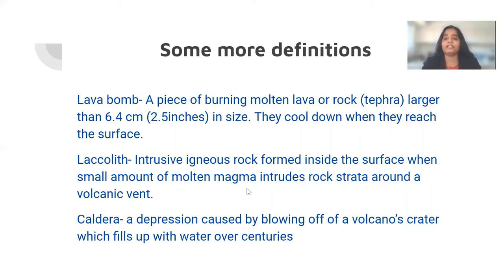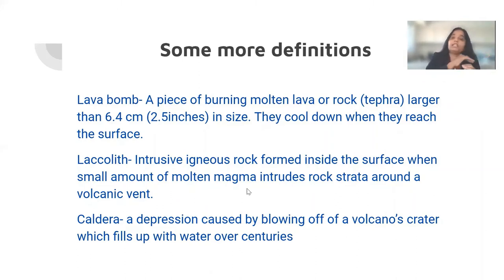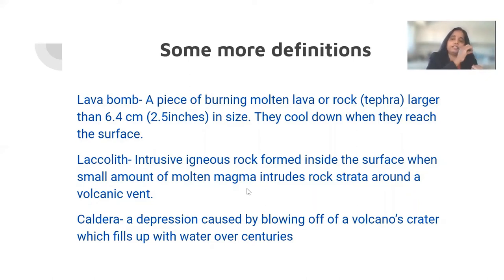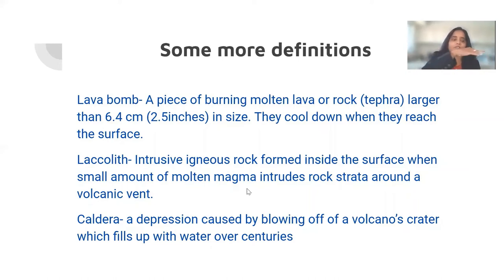What is a laccolith? These are intrusive igneous rocks formed inside the surface. When a small amount of molten magma intrudes into the rock structure around a volcanic vent — rather than erupting out like a volcano — it seeps within the layers of the adjoining rock and cools slowly inside those rock strata. This forms a laccolith.